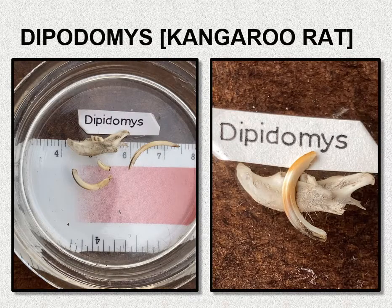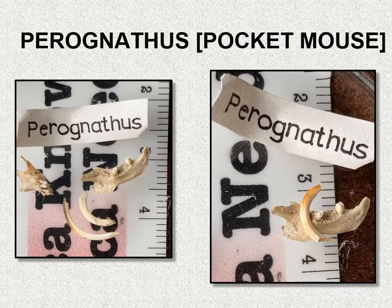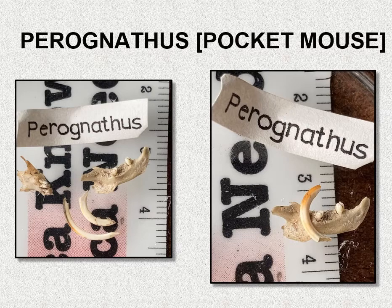This is a kangaroo rat, a Dipodomys. Some of these rodent species have a grooved upper incisor, and I'm showing you that on the right — that's an upper incisor; I'm using the lower jaw just to position that tooth. Kangaroo rats are a sage species. Here is a pocket mouse, a Perognathus. Again, the upper incisor is grooved — it's been slightly fragmented.